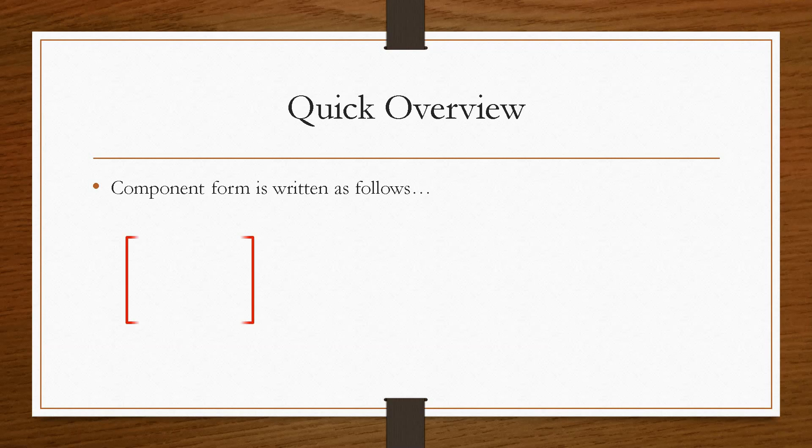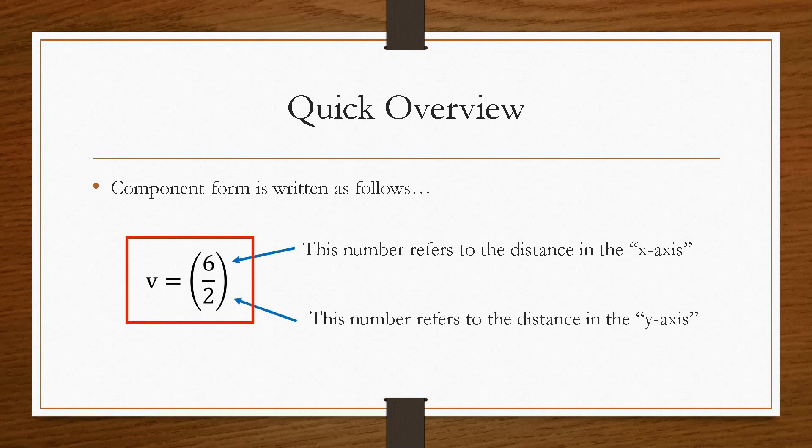Now the component form can be written as follows. The top value refers to the distance in the x-axis, and the bottom value refers to the distance in the y-axis. This is a very simplistic scenario here, because we do take this to the next level with three-dimensional vectors. But just so that we get the component form correct, and we understand how to read these vectors in two dimensions, then it will make it easier for three dimensions.